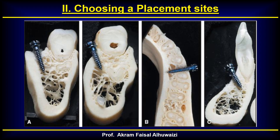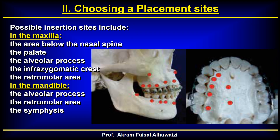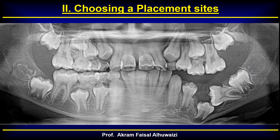The placement site should have adequate bone to cover the depth of the TAD, and at least 2.5 millimeters to cover its width, so it stays away from vital structures. Possible insertion sites include, in the maxilla: the area below the nasal spine, palate, alveolar process, infrazygomatic crest, and retromolar area. In the mandible: the alveolar process, retromolar area, and the symphysis.